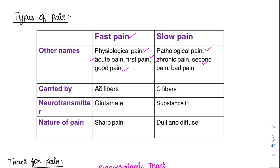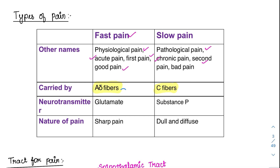The pain fibers are predominantly A-delta and C fibers. Fast pain is carried by A-delta fibers, and slow pain is carried by C fibers. For the MCQ: the neurotransmitter for fast pain is glutamate, while C fibers predominantly produce substance P. Go for substance P as the primary option for slow pain — glutamate is a second option. The nature of fast pain is sharp, while slow pain is dull and diffuse throughout the day.